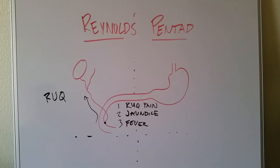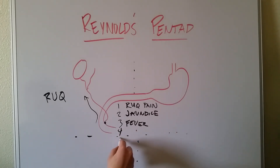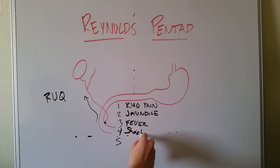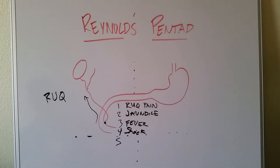Now Reynolds thought that for the really severe cases, to really clue you in to what's going on, he wants to add two more things — number four and number five. Number four is going to be shock or hypotension. So clearly we're talking about a more advanced infection here, something that's really causing the patient to go septic or start to experience septic shock — classic signs like hypotension and vasodilation.